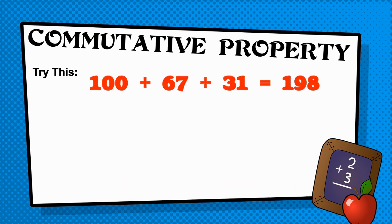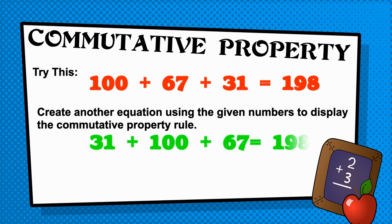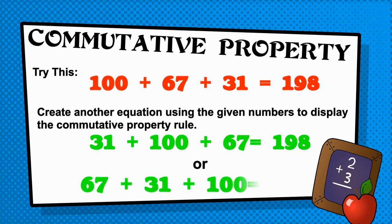Let's look at this example. 100 plus 67 plus 31 is equal to 198. Can you think of another equation using the given numbers to display the commutative property rule? If you said 31 plus 100 plus 67 is equal to 198, or 67 plus 31 plus 100 is equal to 198, then you are correct. Good job, guys. Remember, commutative means order. No matter the order of the addends, the sum is still the same.